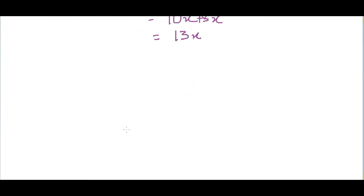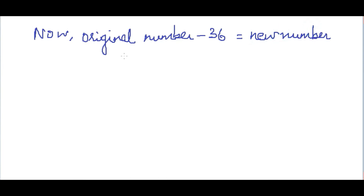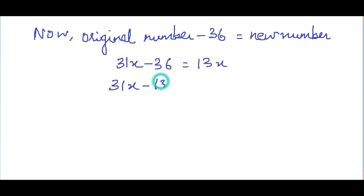The original number is 36 more than the new number, so the original number minus 36 equals the new number. Therefore: 31x minus 36 equals 13x. Taking 13x to the left-hand side gives 31x minus 13x equals 36.